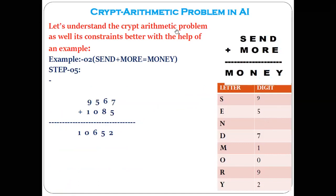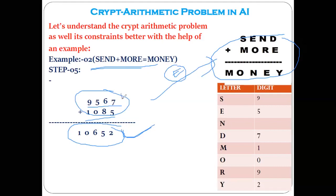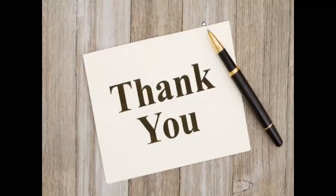Finally, putting all the values together: S=9, E=5, N=6, D=7, M=1, O=0, R=8, Y=2. The solution is 9567 plus 1085 equals 10652, which is correct. This is how you encrypt this message using constraint satisfaction rules. This problem is frequently asked in competitive exams, campus placement aptitude tests, and theory exams.